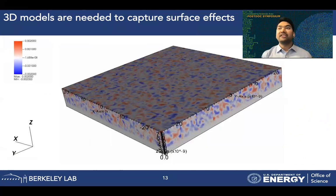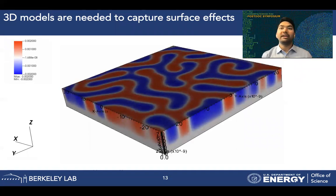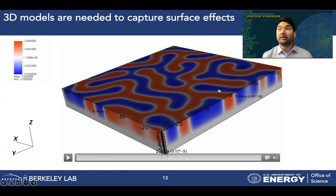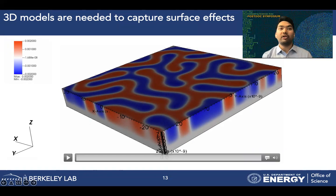Finally, I want to emphasize the need for a 3D model by showing a result from our full 3D simulation. As you can see, the polarization evolved from an initial random distribution to meandering patterns on the surface of the ferroelectric film. These surface effects are important to quantitatively characterize these devices, and they cannot be captured using 2D models.